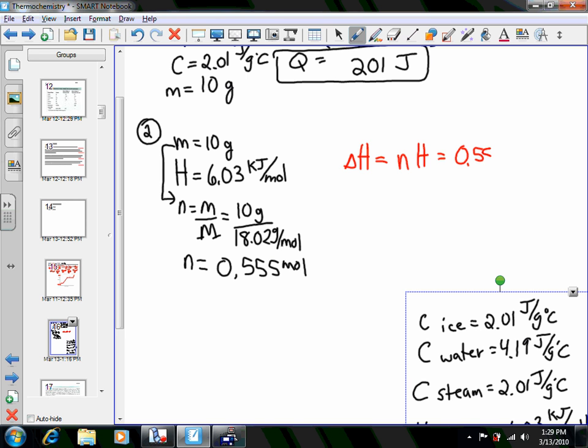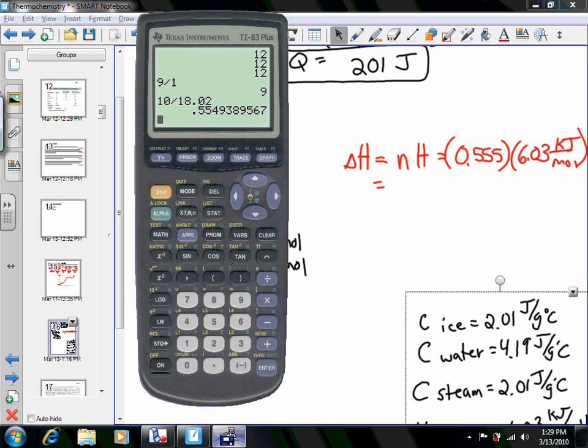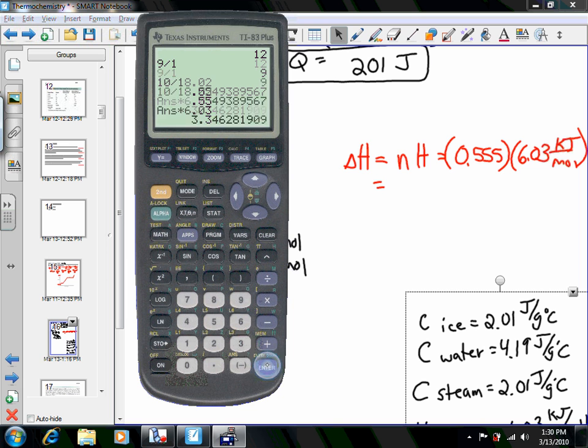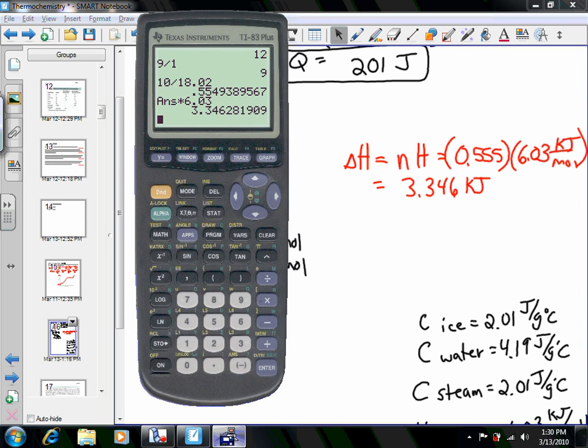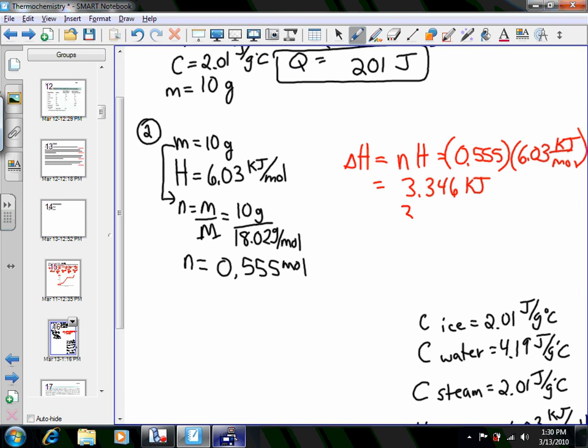So we have 0.555 moles times 6.03 kilojoules per mole. So we need to multiply those together. If we take our answer, we will multiply by 6.03. And you get 3.346 kilojoules, 3.346 kilojoules of energy.